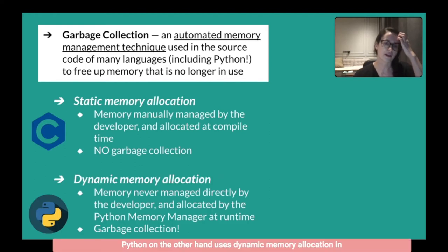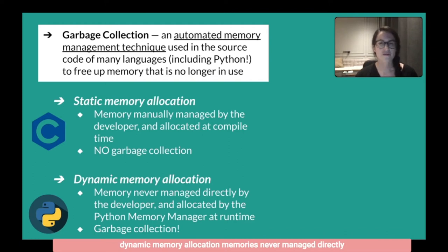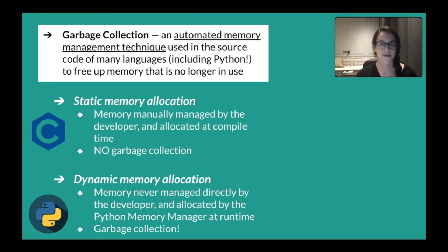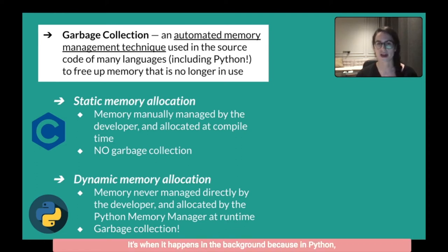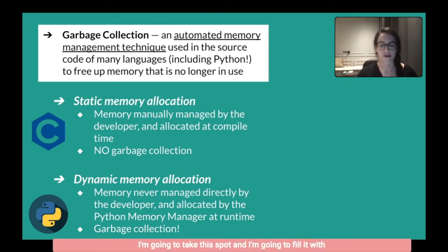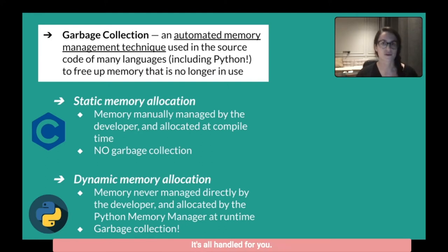Python, on the other hand, uses dynamic memory allocation. In dynamic memory allocation, memory is never managed directly by the developer. It's instead allocated by the Python memory manager at runtime. This is garbage collection — it happens in the background, because in Python you never have to say 'I'm going to take this spot and fill it with this variable.' It's all handled for you.